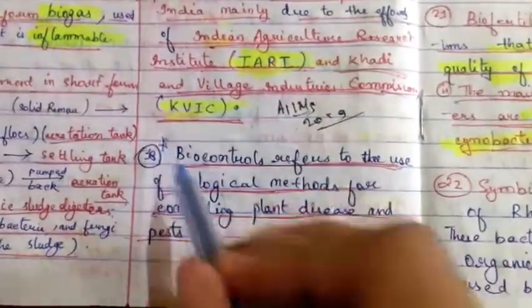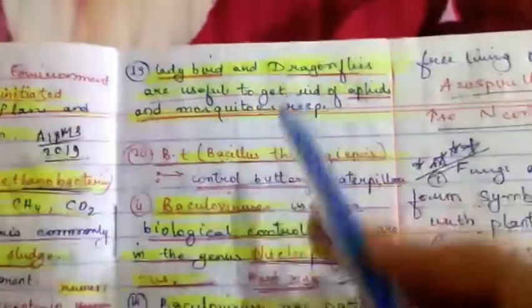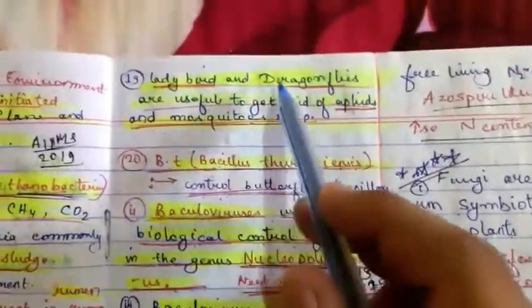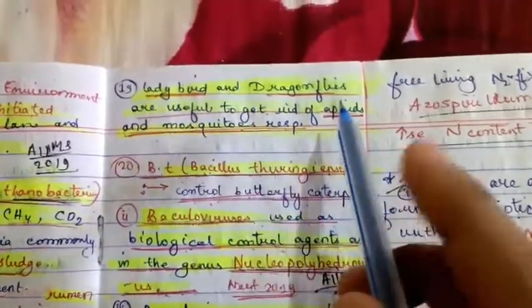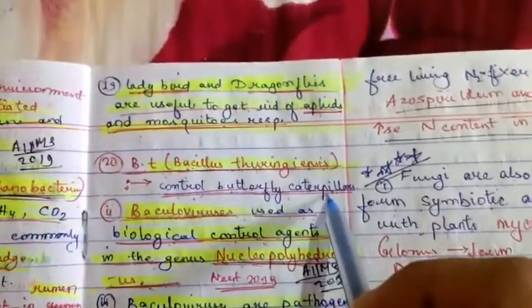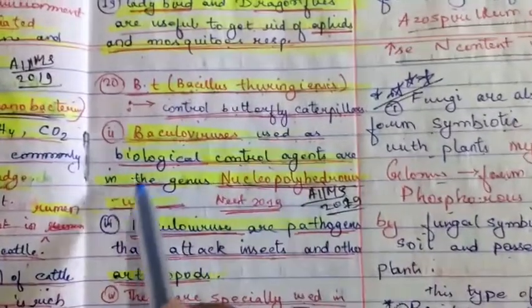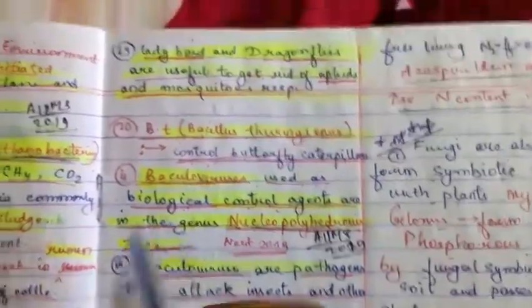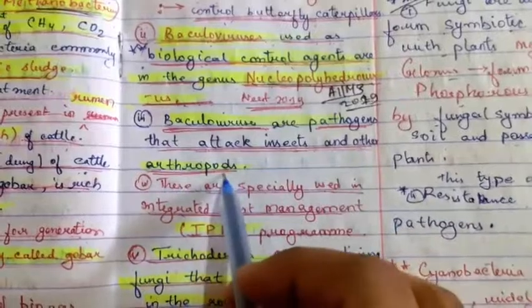Biocontrol refers to the use of biological methods for controlling plant diseases and pests. Ladybirds and dragonflies are useful to get rid of aphids and mosquitoes respectively. Bt — Bacillus thuringiensis — controls butterfly caterpillars. Baculovirus, specifically Autographa californica nucleopolyhedrovirus, is used as a biological control agent and is a pathogen that attacks insects and other arthropods.